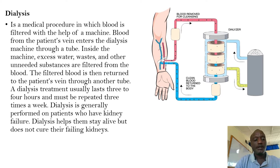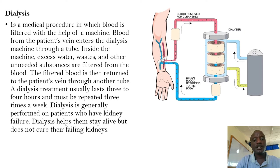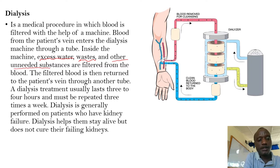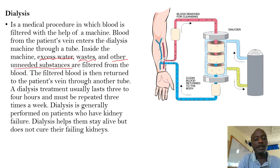Blood from the patient's vein enters the dialysis machine through a tube. Inside the machine, excess water, wastes, and other unneeded substances are filtered from the blood. These are basically the substances that have to be filtered within this dialysis machine.